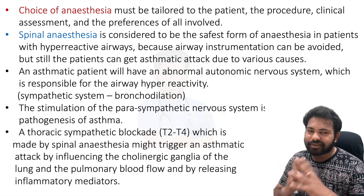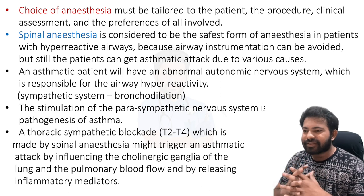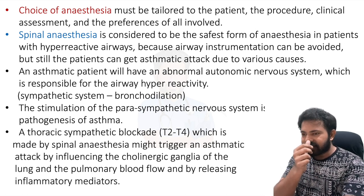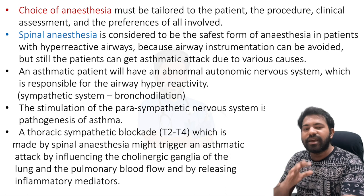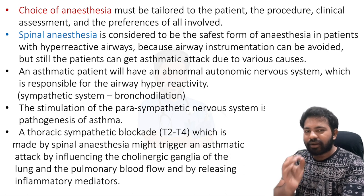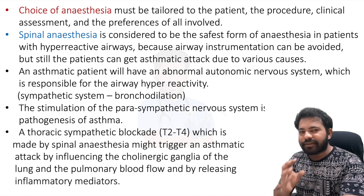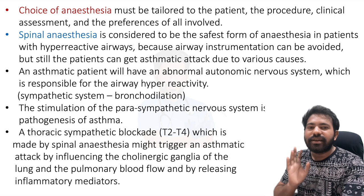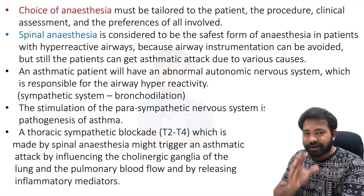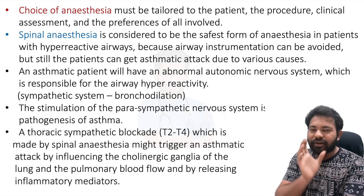The choice of anesthesia will be tailored based on the patient, the procedure, clinical assessment, and the preferences of the surgeon and anesthetist. Spinal anesthesia is considered the safest form in patients with hyperreactive airways because airway instrumentation can be avoided. However, even with spinal anesthesia patients can still get an asthmatic attack — studies show 30 percent of bronchospasm cases during surgery occur in patients who are not known asthmatics.